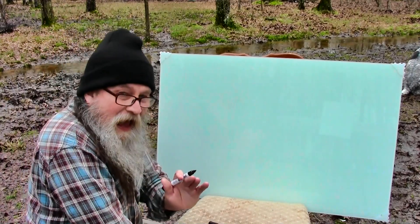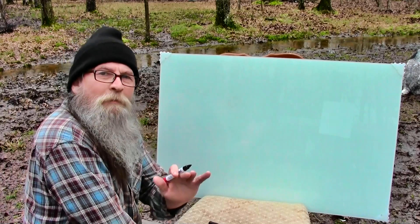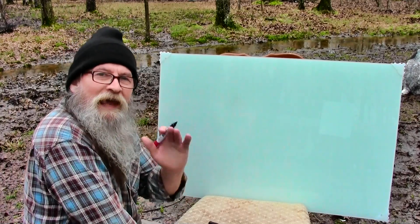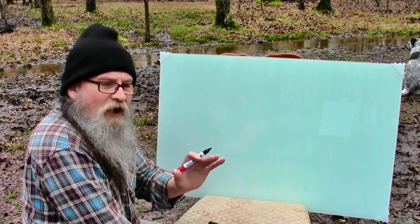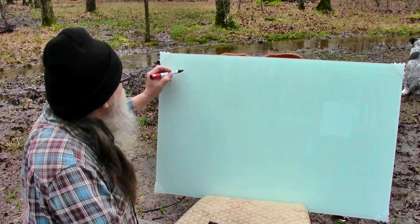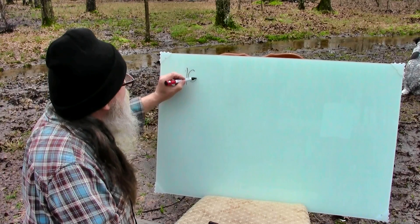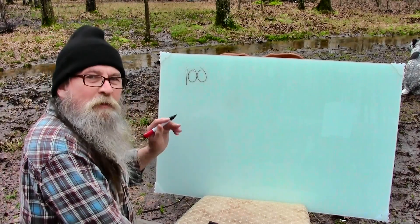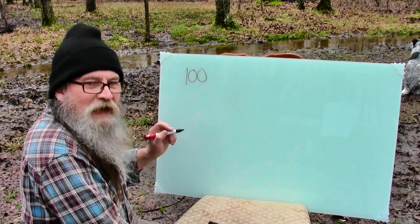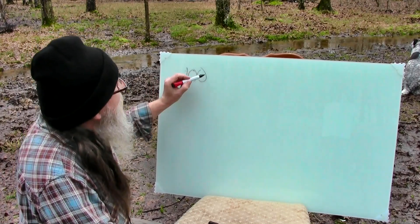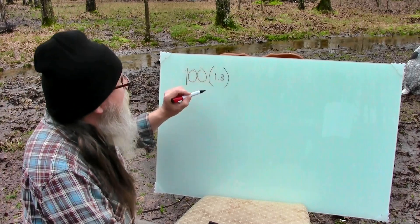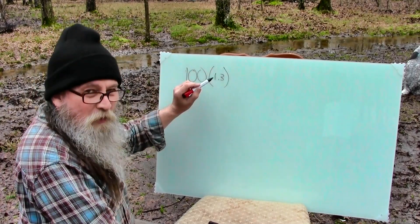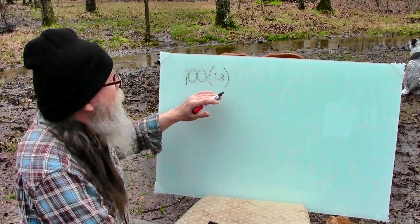And I'm gonna do math, but just worry about the answers, the numbers at the end. Pretend like you're in math class, in science class, and this is what we're talking about. So let's suppose we have 100 people that are sick right now today, 100 people. And let's suppose that they can infect, each of these 100 people infects 1.3 other people.